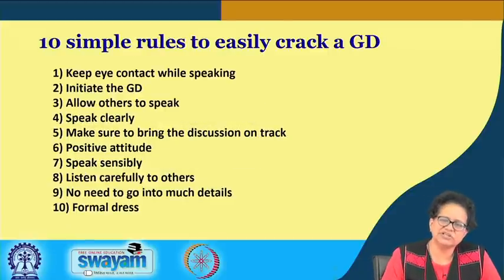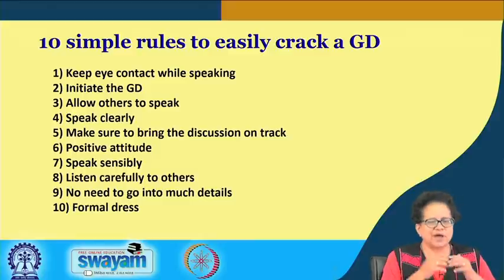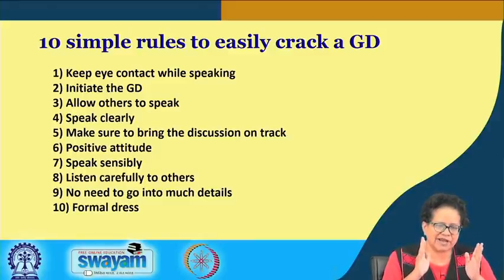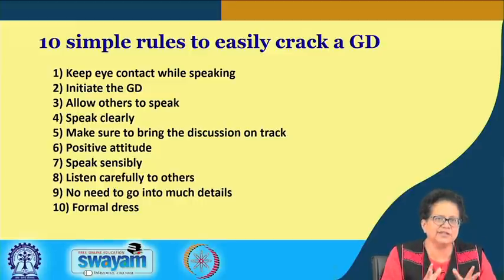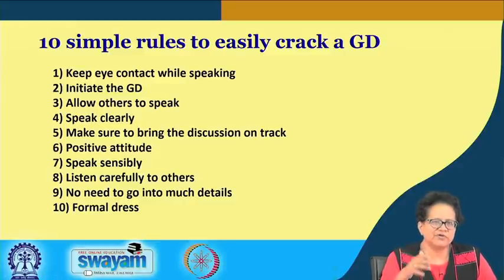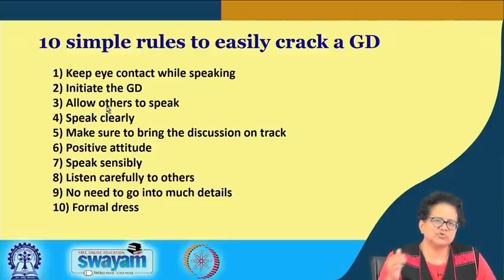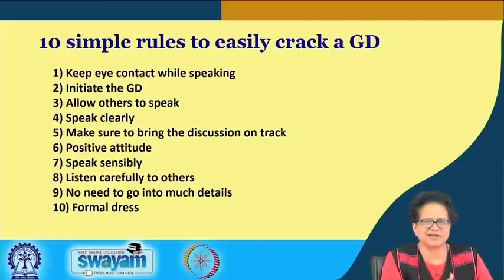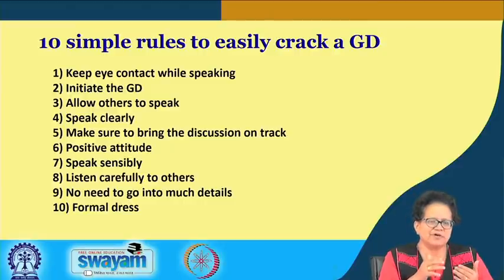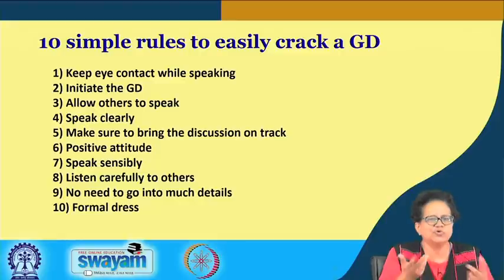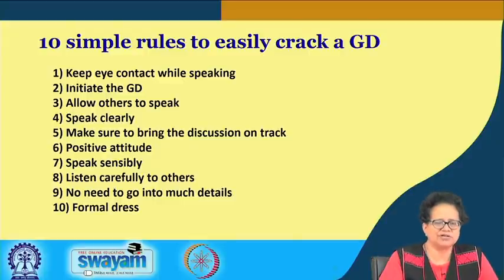There are ten simple rules to easily crack a GD. First, keep eye contact — it means you are in direct communication and engaged in the discussion. Second, as discussed in the previous lecture, if you initiate the GD it shows leadership qualities. Third, be polite and allow others to speak — do not interrupt; let them complete their point, and speak when you find a gap and eye contact ends. Fourth, do not be in a hurry; speak clearly and be slow and deliberate.